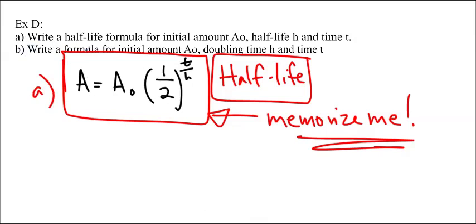And then part b, it says write a formula for initial amount a-naught with a doubling time of h and time t. So, now we're talking about doubling instead of halving. And the big difference here is just, again, the growth factor. So, instead of having a decay factor, we're going to have a growth factor. And it's a-naught times two to the t over h. So, where we're doubling, we write a two here. If I was saying tripling, then I'd have a three here. If I was quadrupling, I'd write a four here and so forth. So, that is how we use this formula. So, the half-life doesn't just apply to half-life. It actually works for a variety of different types of problems.